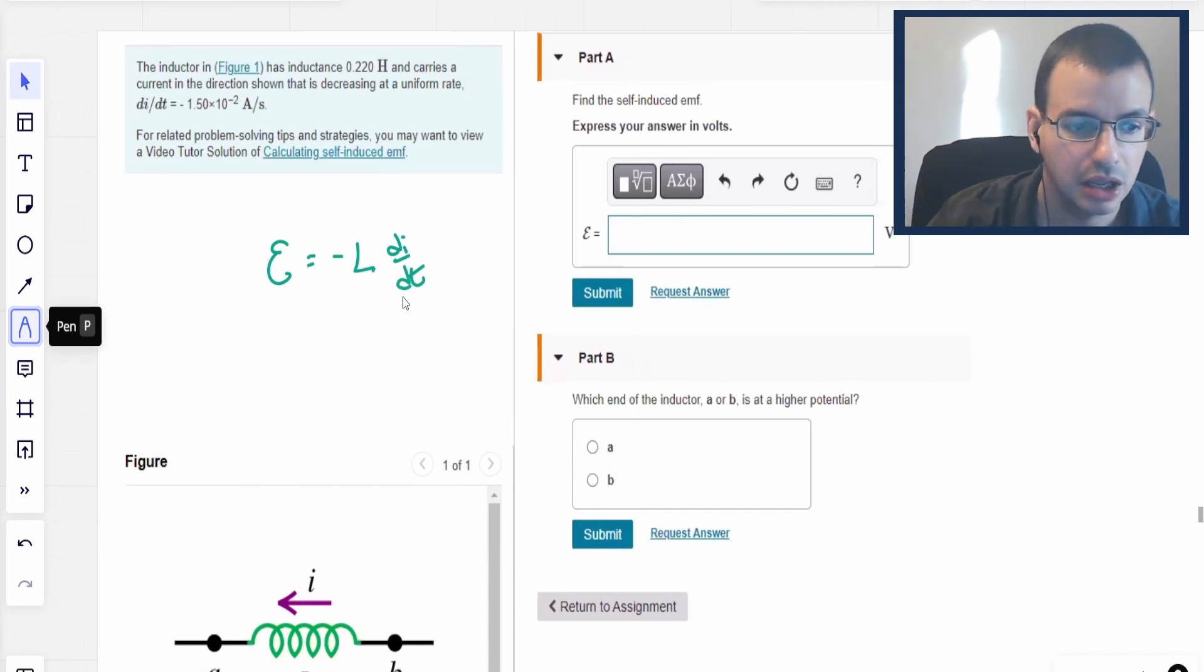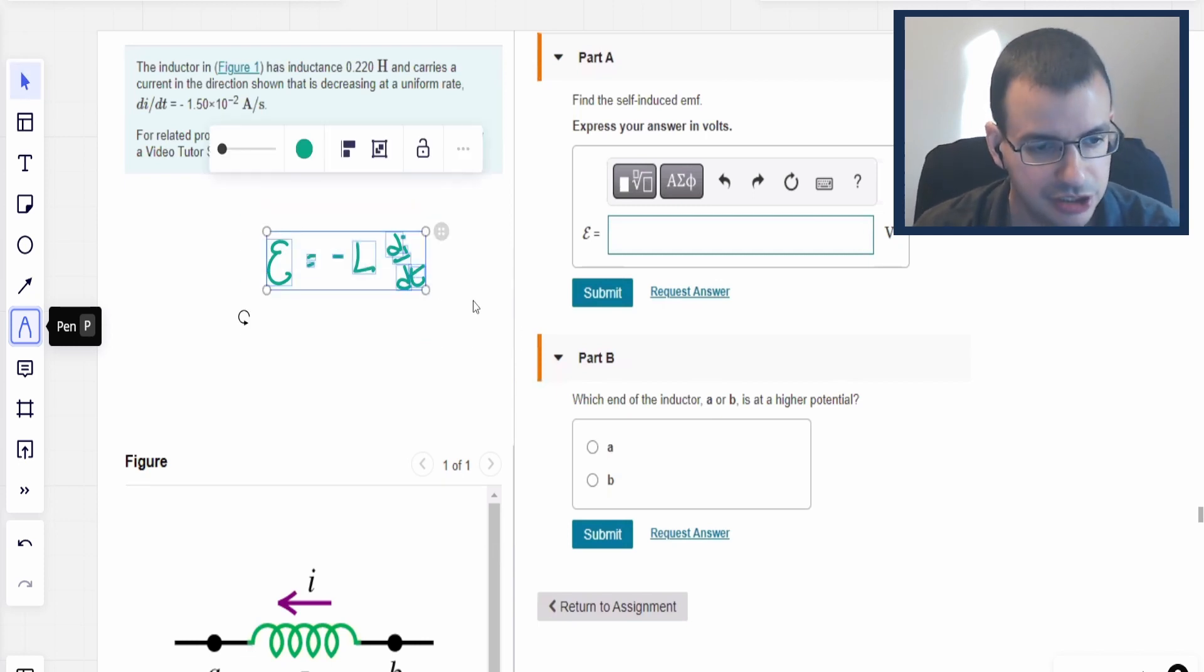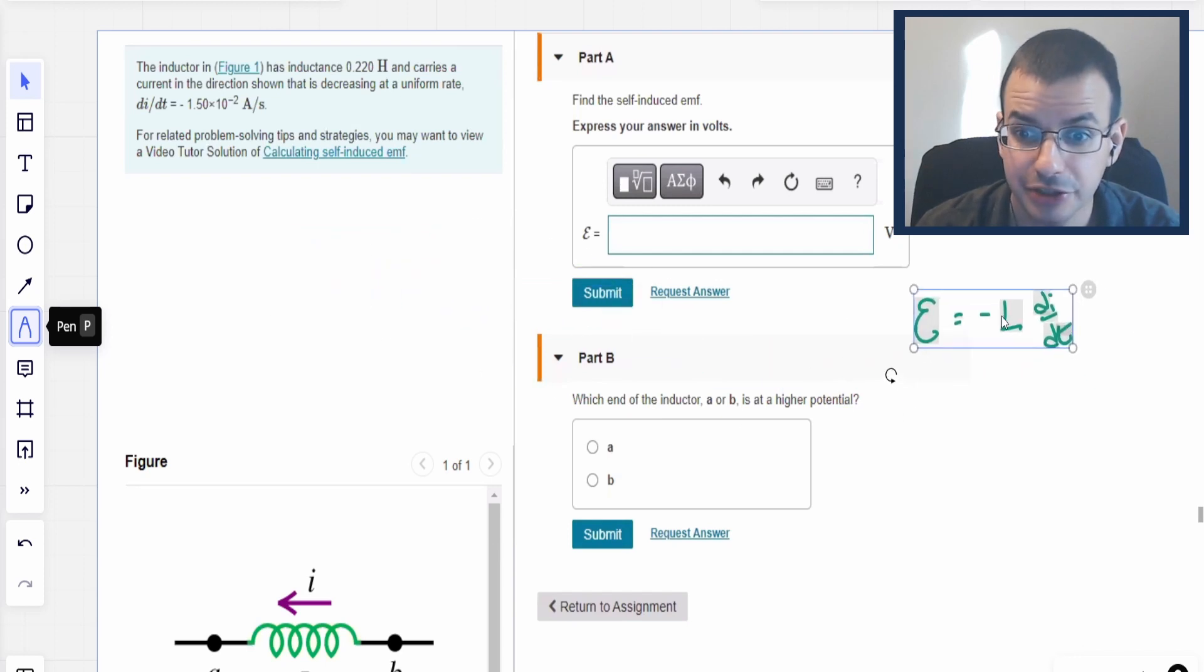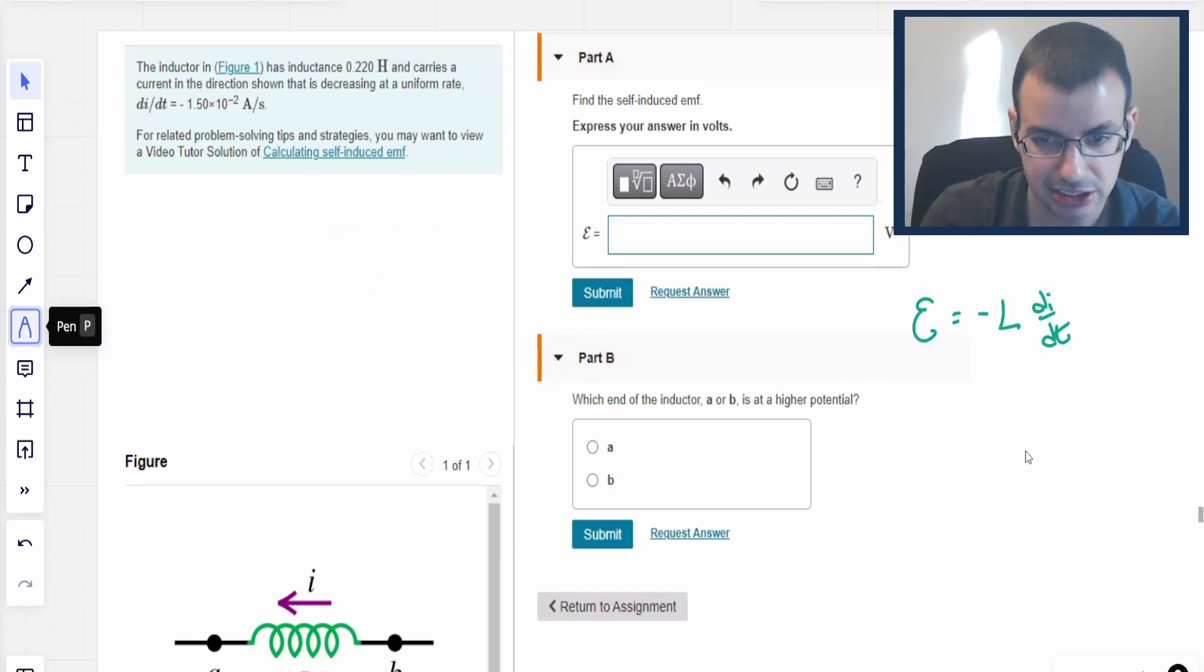So this is basically the definition of inductance. For different shapes of inductors we have different formulas that we can use, but they give it to us here, so that is easy. For this we're just going to say that emf equals negative L which we're told is 0.22